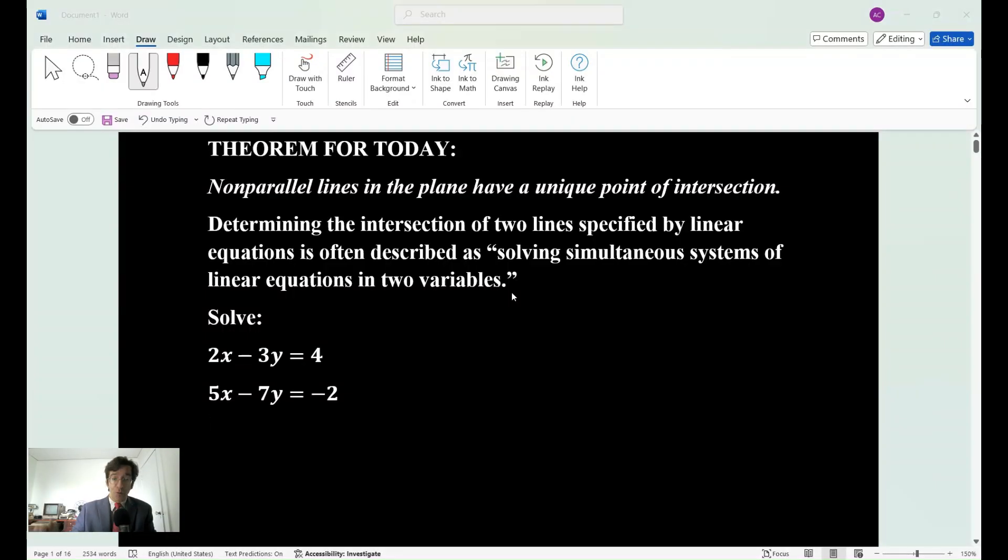There's going to be two theorems for today. Here's the first theorem and I hope you know this by now. Non-parallel lines in the plane, in the coordinate plane, have a unique point of intersection. And we normally call that, when you determine the intersection of two lines, we call it solving simultaneous systems of linear equations in two variables.